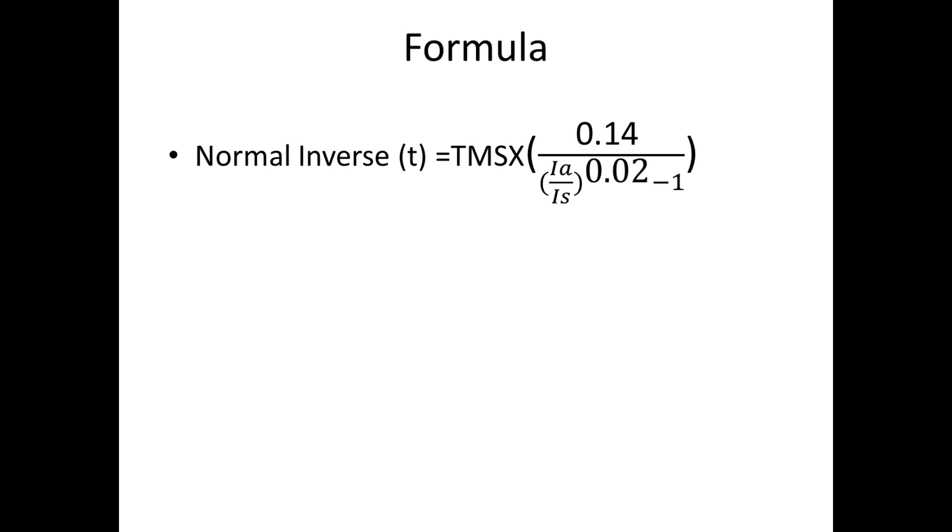For very inverse we get: TMS times 13.5 divided by (Ia/Is) to the power 1 minus 1.